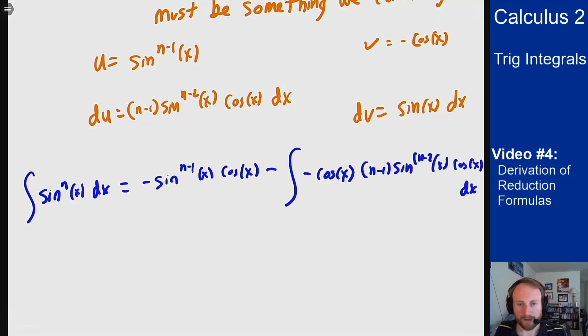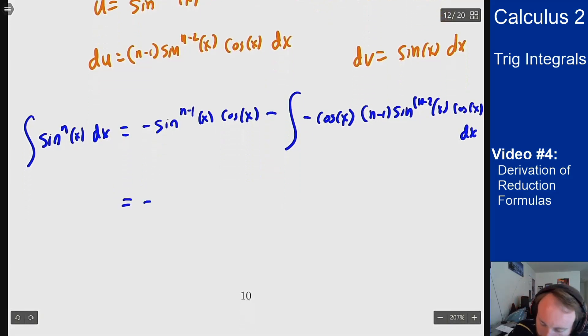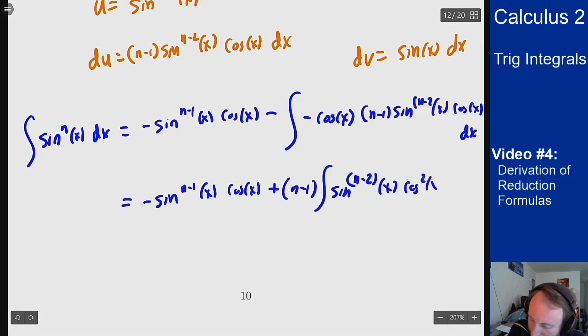Now I'm going to rewrite that last integral a little bit. Cancel the minus signs and put the cosines together to give me the following: negative sine to n minus 1 of x cosine of x plus n minus 1 integral sine to the n minus 2 of x cosine squared of x dx.